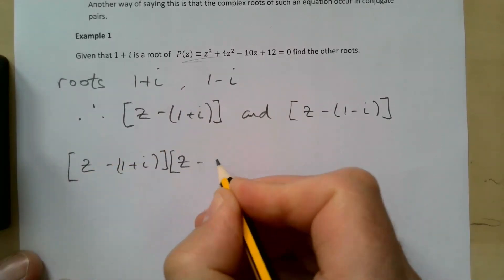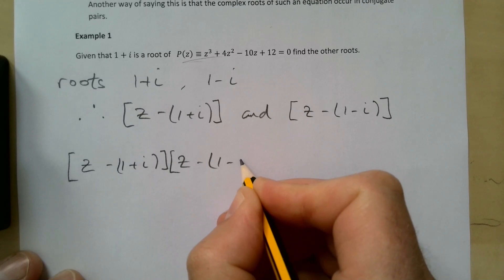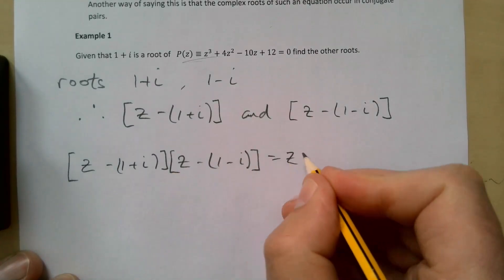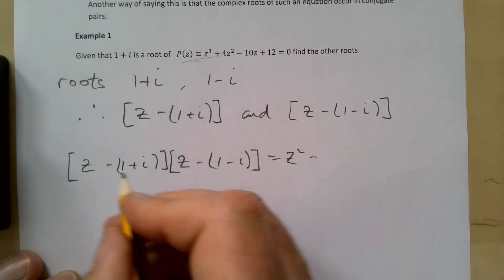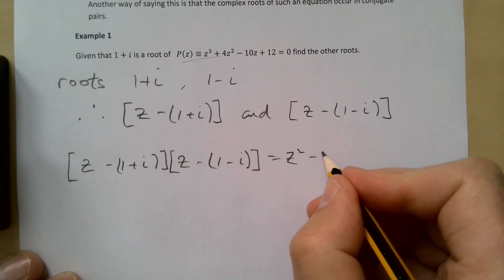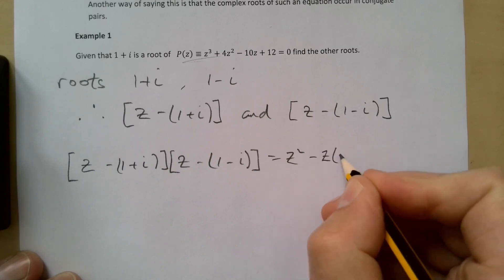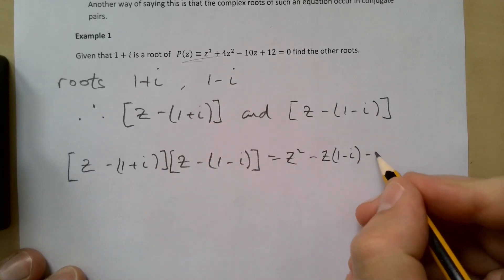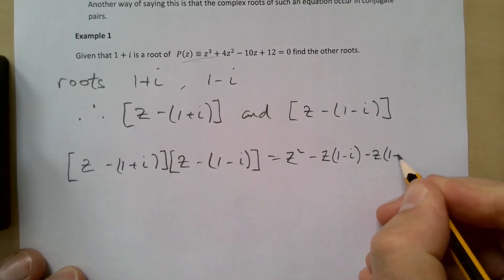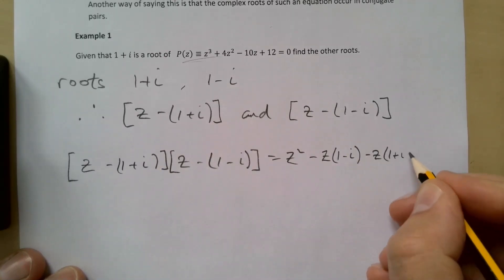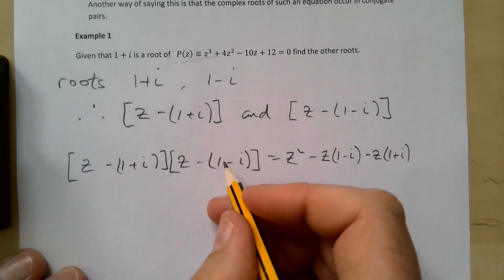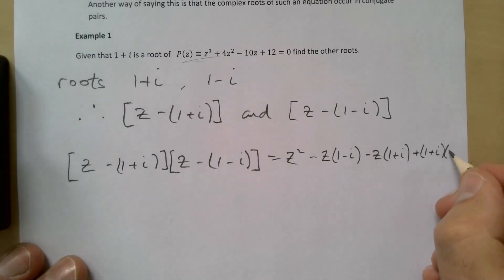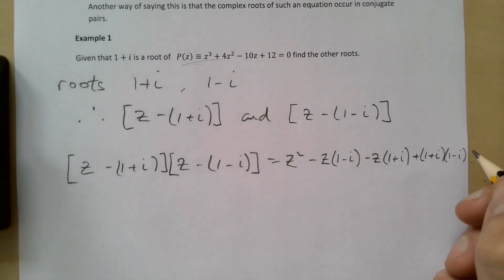First times first: z². Outer: minus z times (1-i). Inner: minus z times (1+i). And then the two last: the minus times minus is plus, (1+i)(1-i).